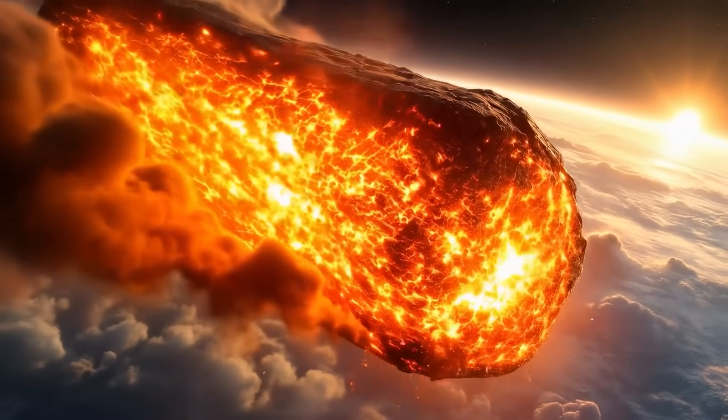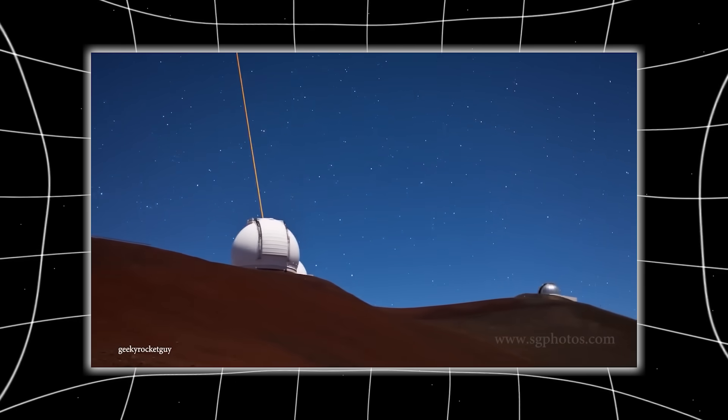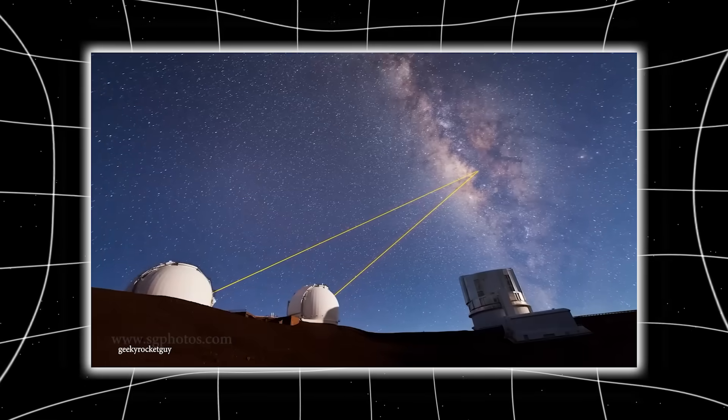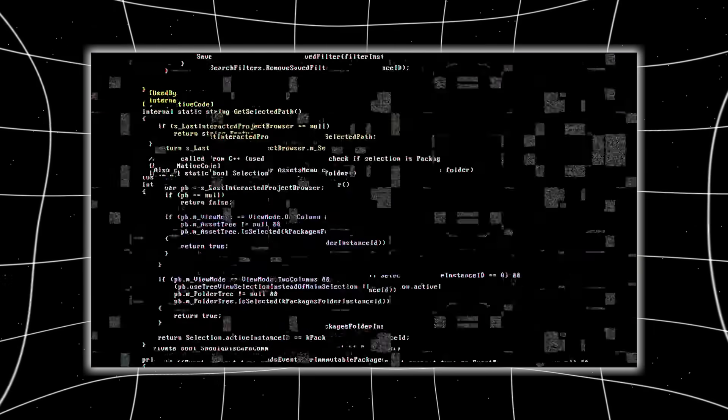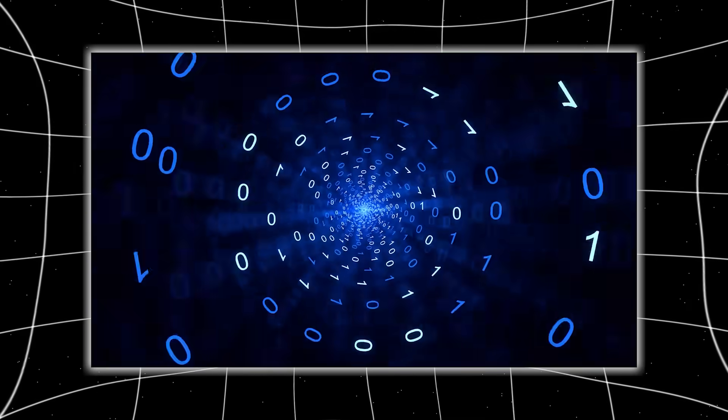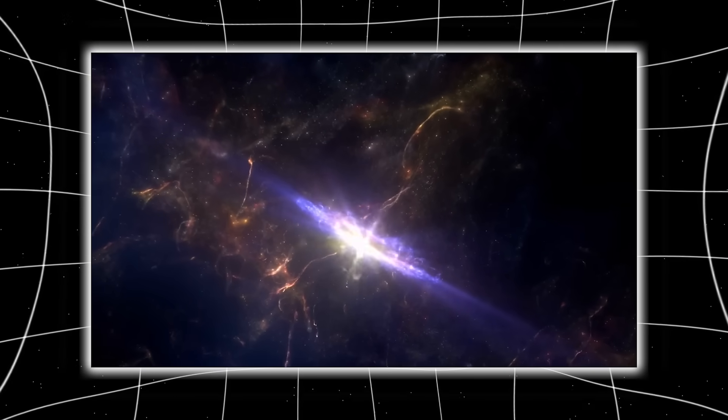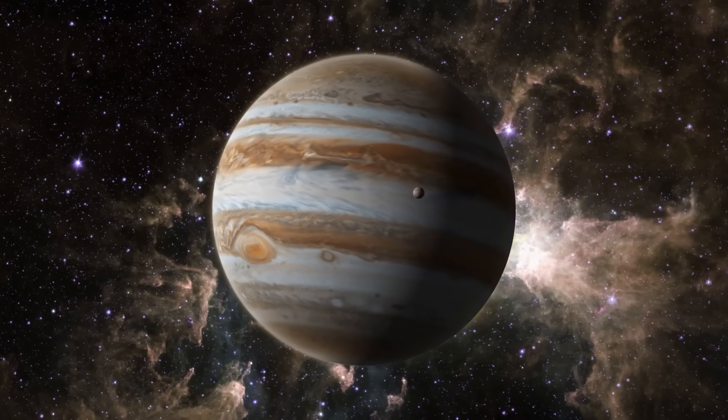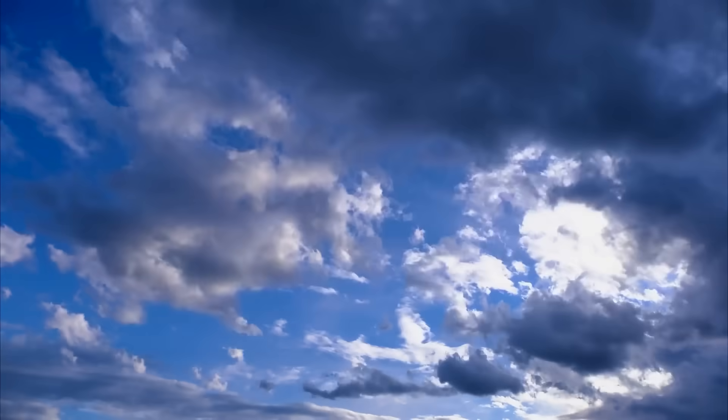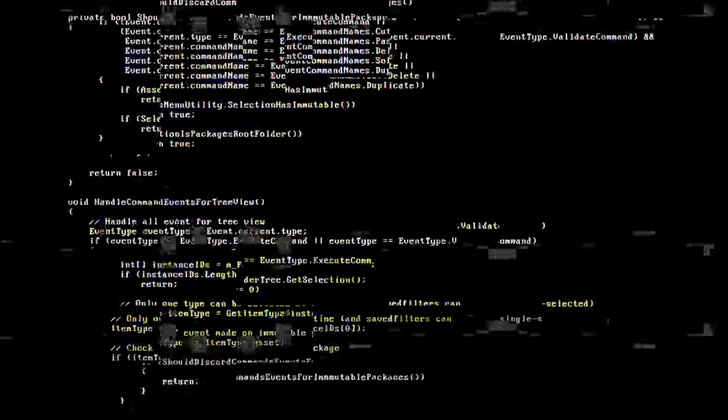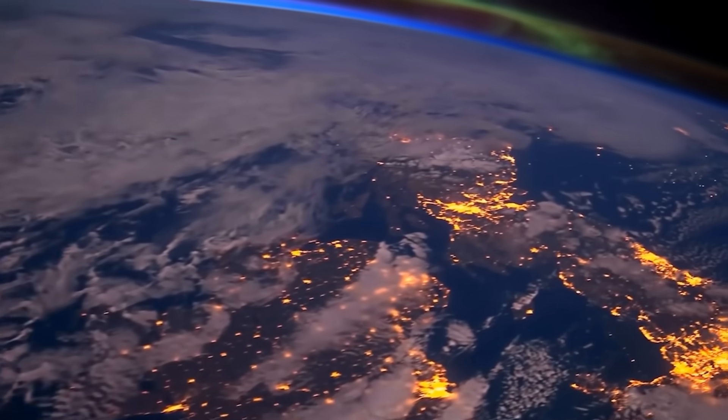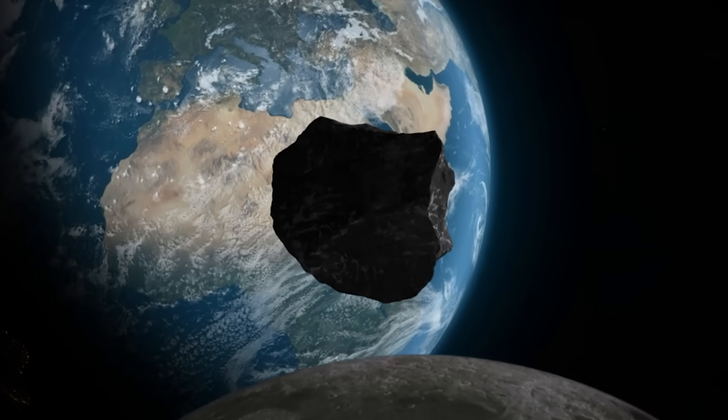Then came the most disturbing discovery of all. The IAWN command center in Vienna received a priority transmission marked Level Omega. It contained a partial data stream reconstructed from the blackout window, the missing 47 minutes. When decrypted, the data wasn't telemetry or images. It was binary. A structured transmission embedded inside the network itself, synchronized with 3I Atlas's pulse sequence. And when decoded, it formed coordinates, but not for space, for time. The location matched the orbit of Jupiter, but the timestamp didn't. It pointed forward, exactly six years into the future. As the reconstruction continued, something horrifying became clear. The coordinates weren't for Jupiter. They were for Earth. A trajectory marker, precise to within kilometers, indicating where 3I Atlas would intersect with our planet's orbital plane in the year 2031. The object hadn't escaped the solar system. It had set a return point.